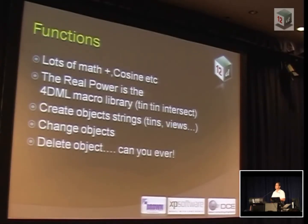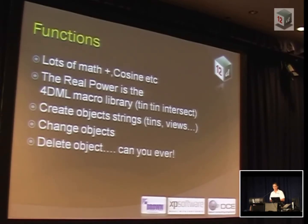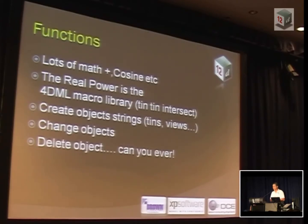Once you have objects, you want to do something to them, and you do something to these objects with functions. We've got a whole pile of mathematical functions, but the real power to the 12D macro language is our macro library of functions. For example, the tin-tin intersect — you can imagine the amount of work that went into doing something like that, especially if you want to do it for a super-TIN. When you want to use the macro language, you call one statement to do a tin-tin intersect. So there's a whole library of incredibly powerful functions.